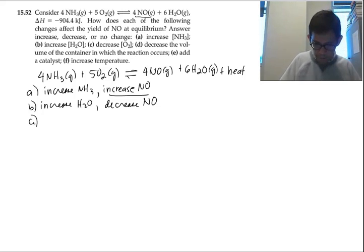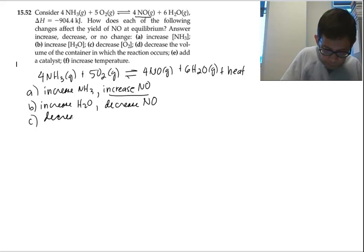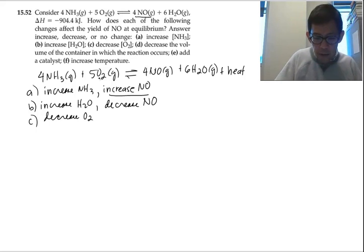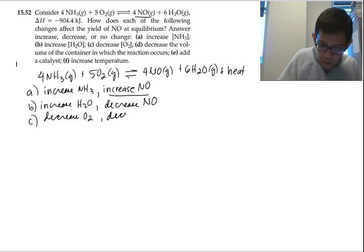Part C. Decrease O2. O2 is on the left side. If you are removing O2, the system will adjust to recover the lost O2, so it shifts left. When it shifts left, you decrease the amount of NO. Decrease NO.